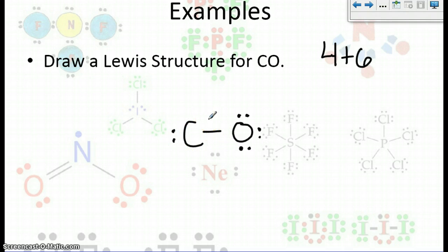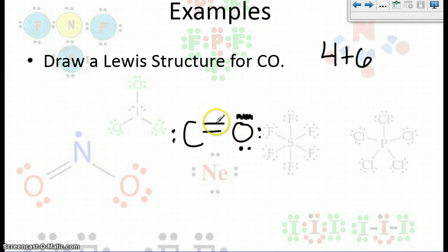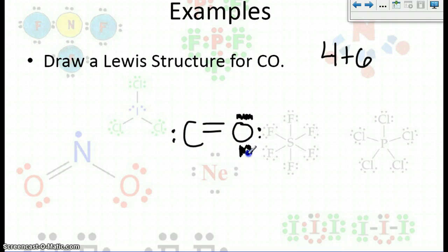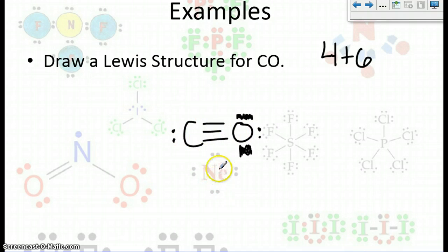So we're going to have to do something a little different. Let's see if we can move some of these lone pairs. Now oxygen has two, four, six, eight — and carbon has two, four, six — it's better, but not quite. So let's move one more pair. Now carbon has two, four, six, eight. Oxygen has two, four, six, eight. So everybody is satisfied in this example.